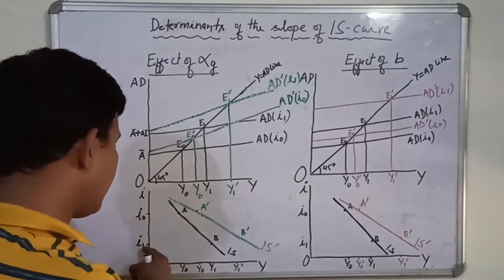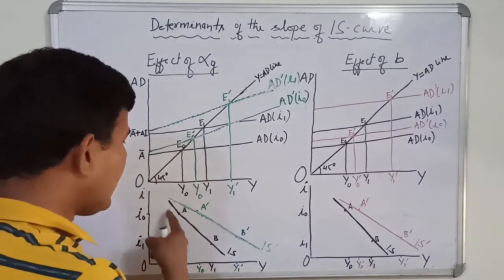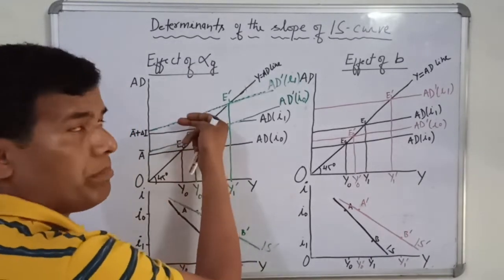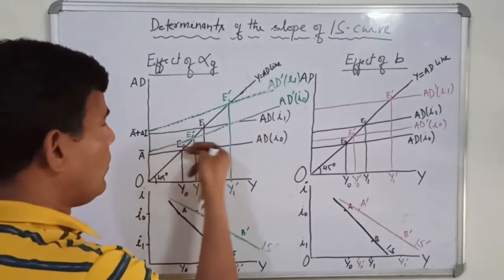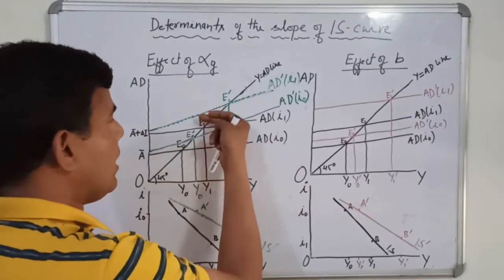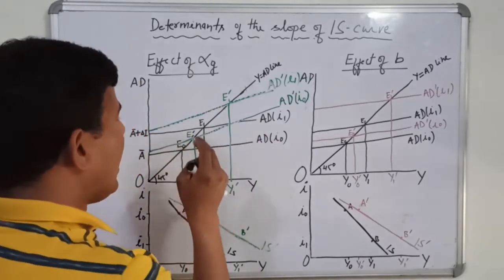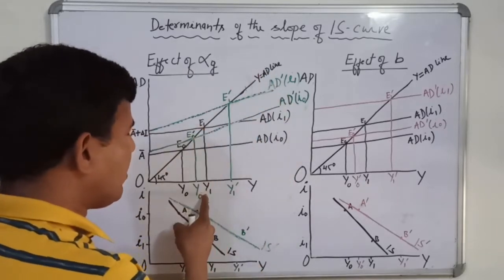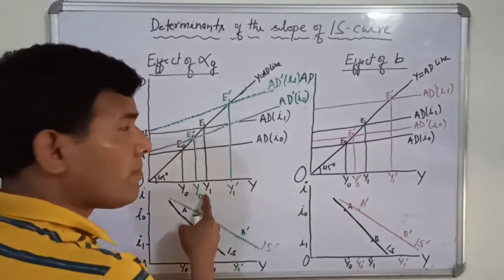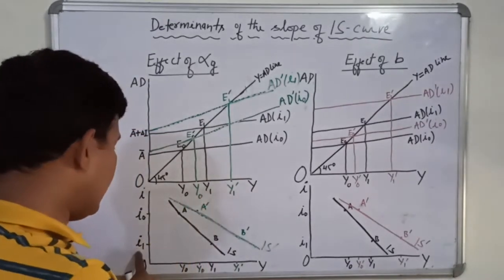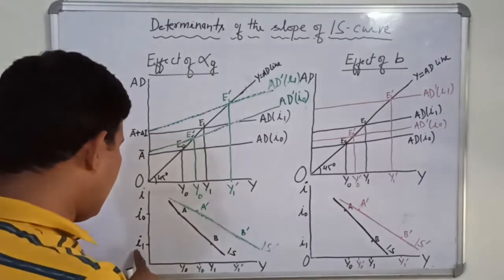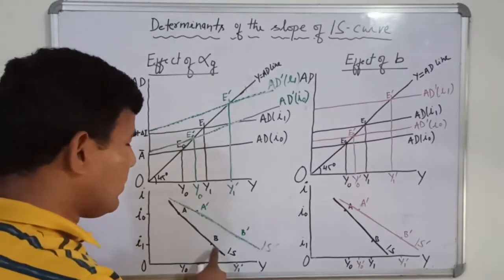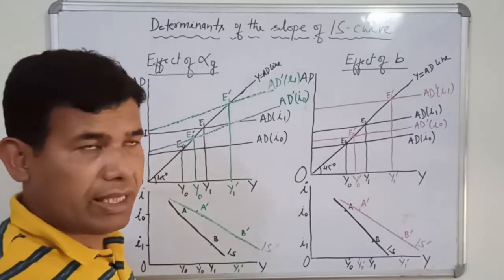Now suppose interest rate falls. What happens? Investment rises, and when investment rises, aggregate demand shifts up. The black aggregate demand line shifts up and you get a new aggregate demand line. That new line intersects the 45-degree line at point E1, giving us equilibrium level of income Y1. So we get Y1 corresponding to I1 interest rate. That combination of Y1 and I1 is represented by point B. When we join A and B, we get the IS curve.